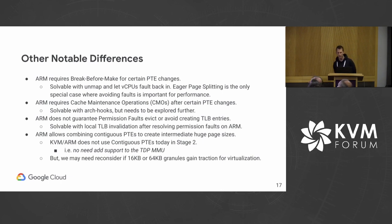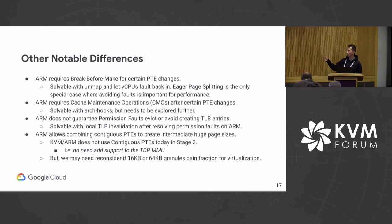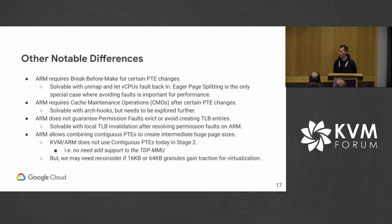ARM requires break-before-make for other PTE changes as well, but reviewing the TDP MMU, none appear relevant to the types of PTE changes it makes — most of the time when modifying PTEs, we just unmap the range and let vCPUs fault it back in. Eager page splitting is the only case where we're actually changing PTEs in place requiring break-before-make on ARM. ARM also requires cache maintenance operations after certain PTE changes, so we would need to audit the different PTE changes in the TDP MMU and ensure there are appropriate hooks for ARM. ARM also does not guarantee that permission faults evict or avoid creating TLB entries — on x86, if you get an EPT violation, any entry in the TLB that caused that fault is guaranteed evicted. On the ARM side, for example taking a write protection fault during dirty logging, you actually have to do a TLB flush.